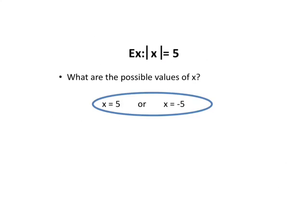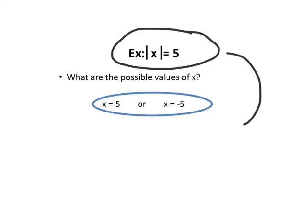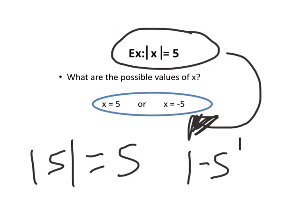Let's get into absolute value equations. Absolute value equations are simply equations that contain an absolute value sign. Think about this: what are the possible values of x if the absolute value of x equals 5? There are two possible outcomes — 5 and negative 5. The absolute value of 5 is 5, and the absolute value of negative 5 is positive 5. So there are two solutions.